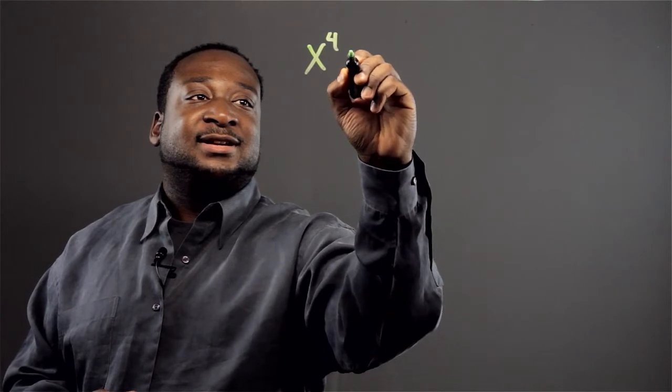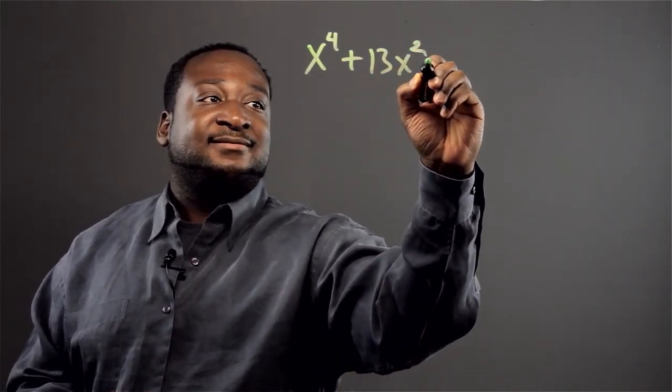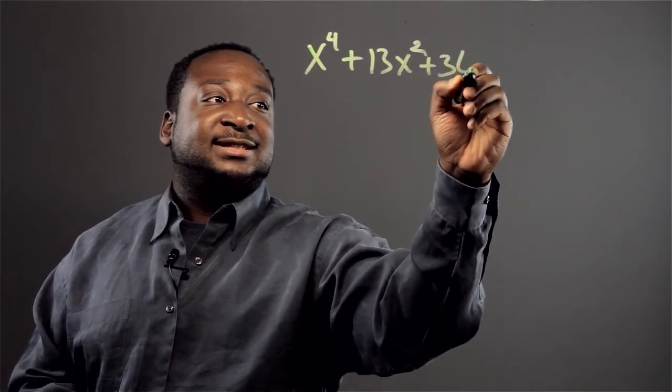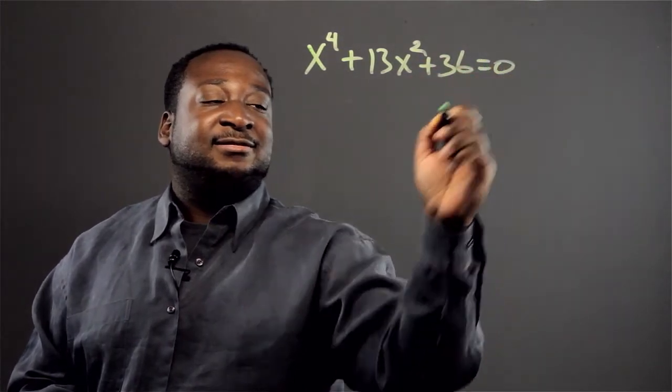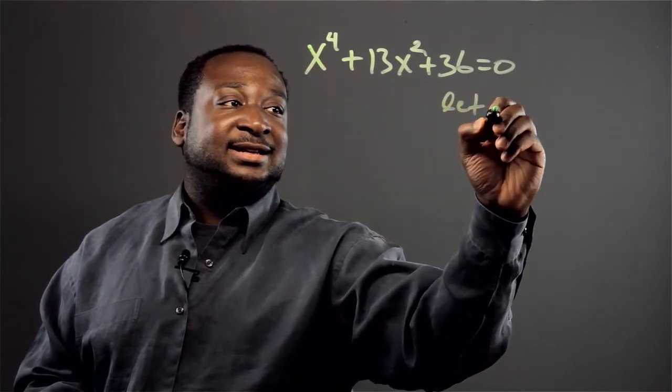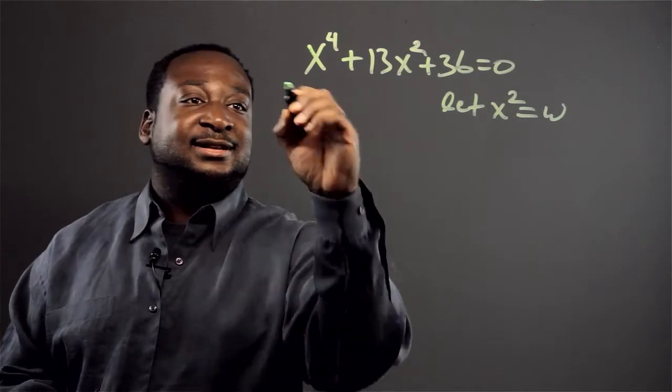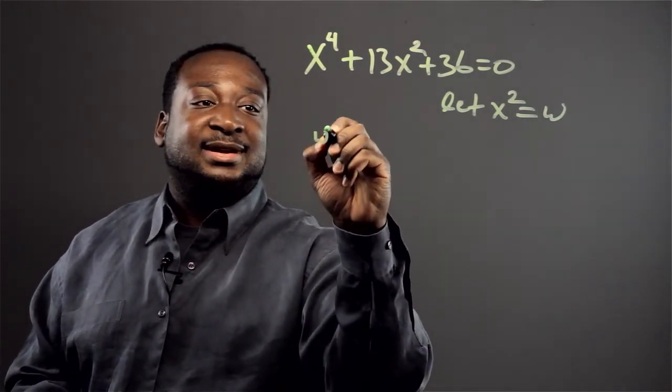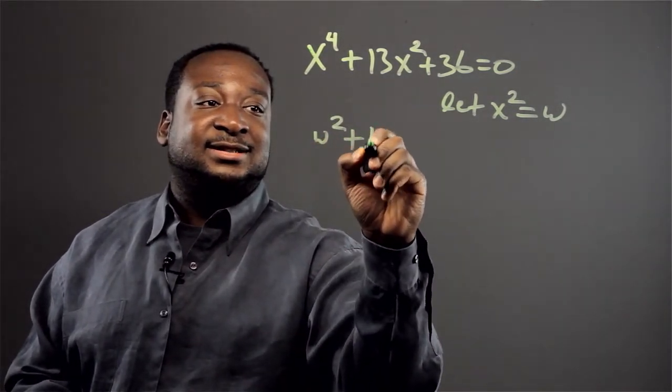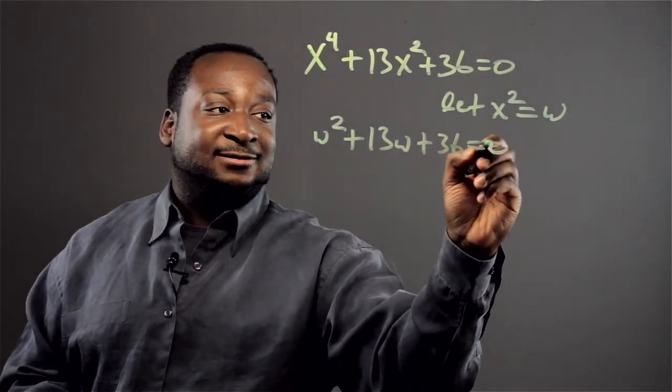Let's say, for example, we have the equation x to the fourth plus 13x squared plus 36 equals zero. We can let x squared equal w, so we get w squared plus 13w plus 36 equals zero.